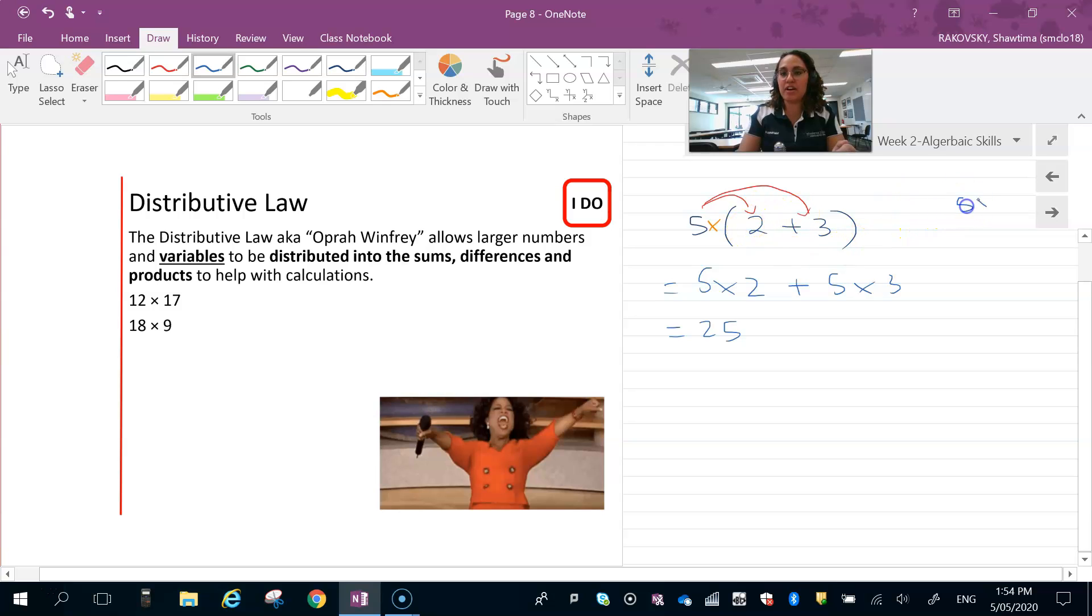Ten plus fifteen gives us twenty-five, and that makes sense because if I did the orders of operation here, five times five because two plus three is five equals twenty-five. Hey presto, there we go. Both of those are twenty-five.